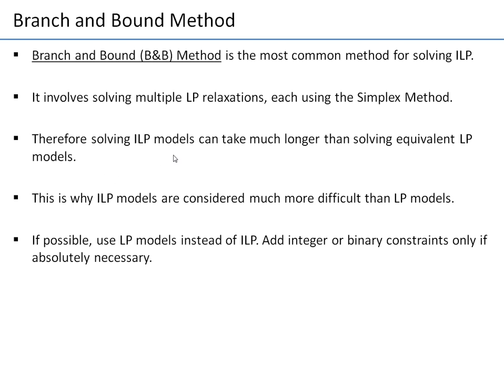If I take a continuous model and solve it, it might solve in a second. But if I add integer constraints to some or all variables, it might actually take much, much longer. That's why we consider integer linear programming models much more difficult than linear programming models. Practical advice: don't add integer constraints unless you really need them. Don't add integer or binary constraints if you might accept a fractional solution.